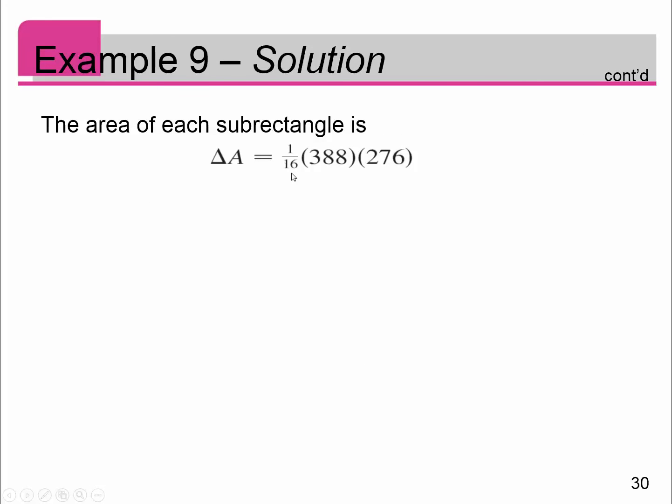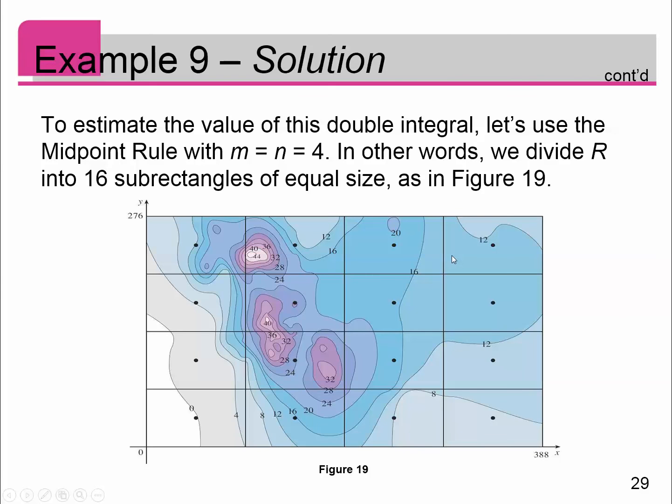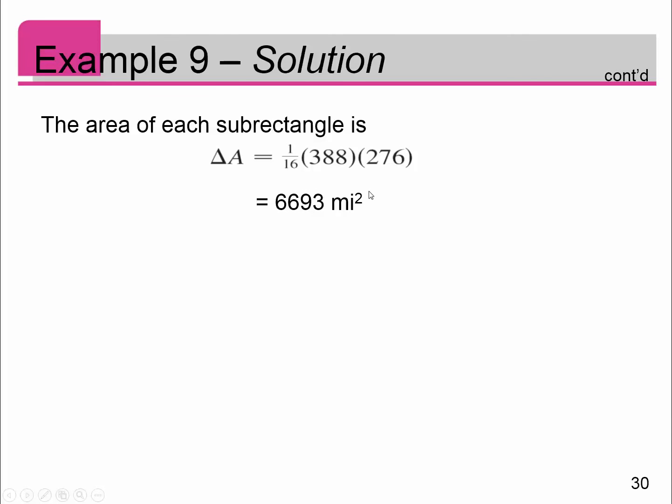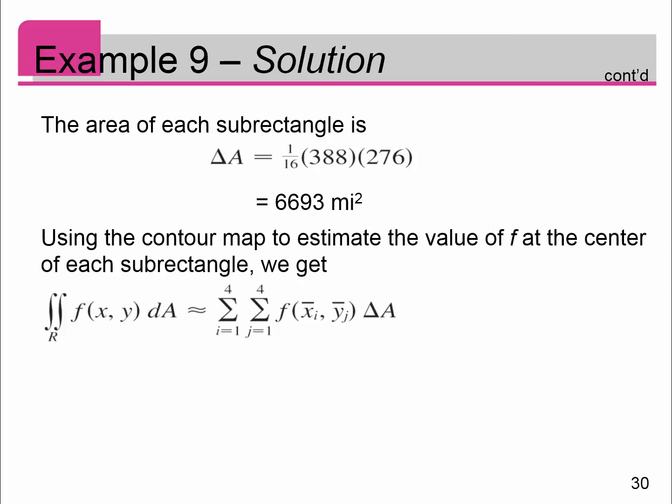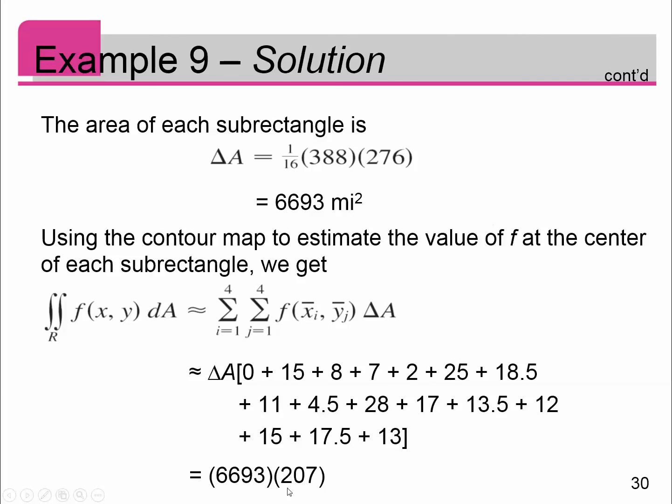The area of each sub-rectangle is going to be 1/16th of 388 times 276. There's 16 of them. I'd plug that in my calculator at 6,693 square miles for each of my 16 sub-rectangles. So my actual double integral could be approximated by adding up the 16 sub-rectangles, evaluating each function, times delta A. Delta A is going to be 6,693. I just went through at each midpoint, approximated what the amount of snowfall was at that point and added them all up and got 207.